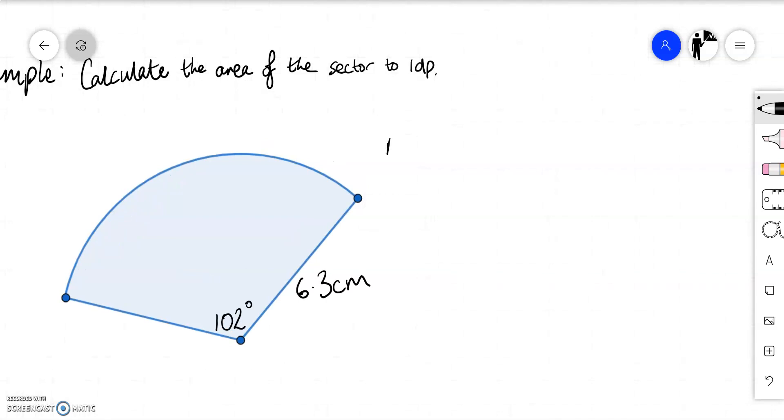Okay so I'll write down my formula. Area of a sector equals angle over 360 times pi r squared. And then we can just start substituting in. The angle that we're given is 102. So it's 102 over 360 multiplied by pi times the radius. The radius is 6.3 times 6.3 squared.